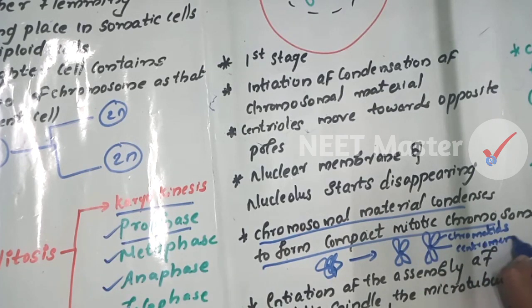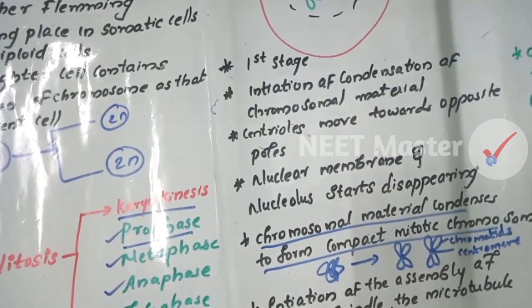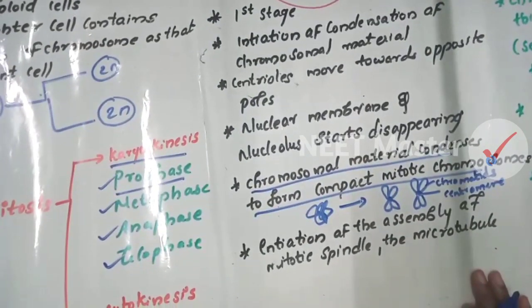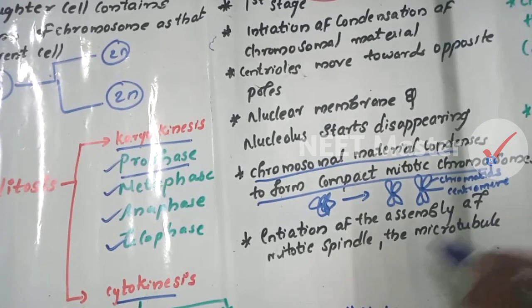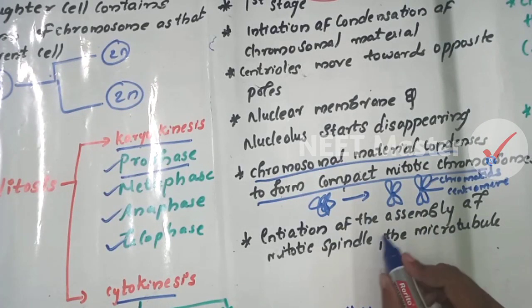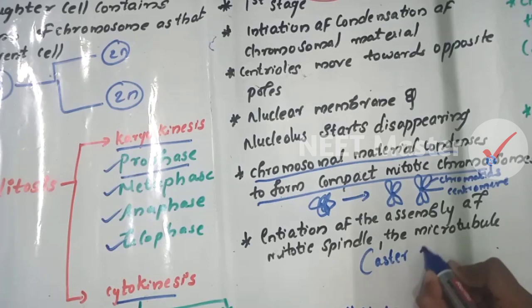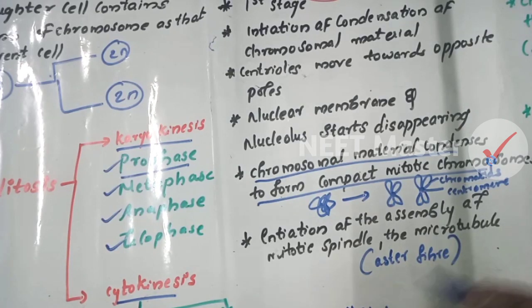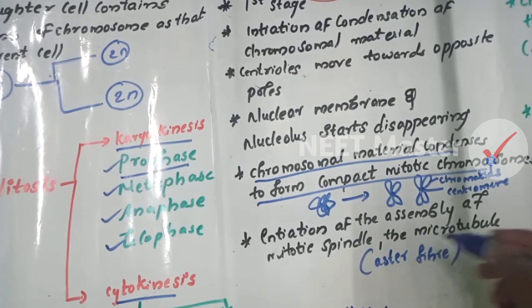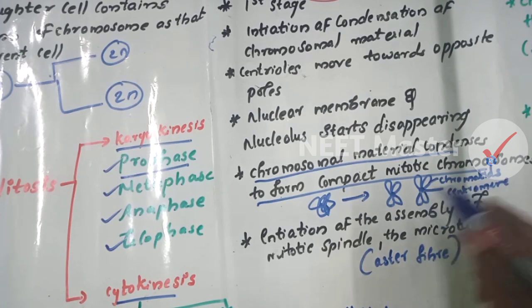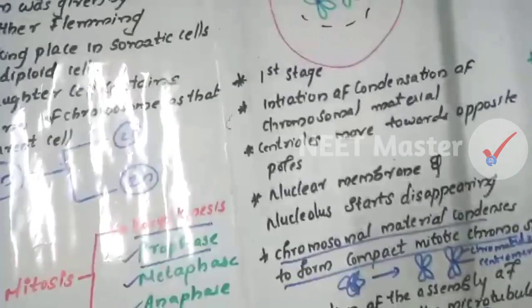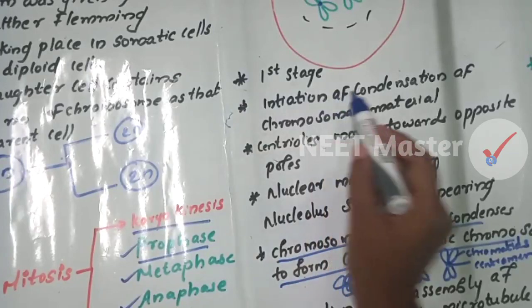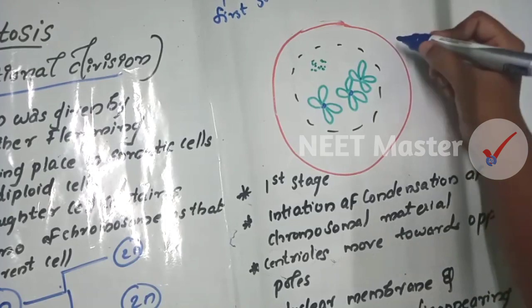This is the initiation of the assembly of the mitotic spindle. The microtubules, the proteinaceous component of the cell cytoplasm, help in this process. The nucleus membrane begins to disappear, and the centrosomes move to opposite poles.